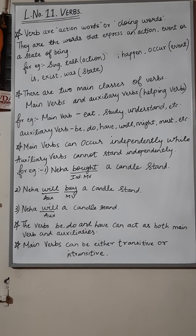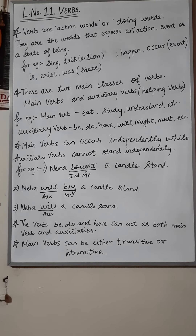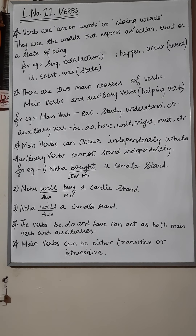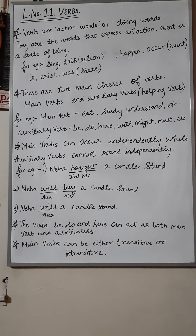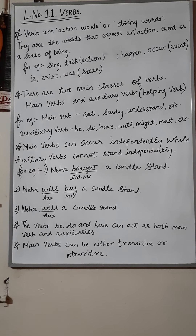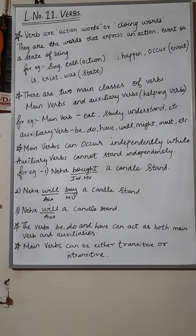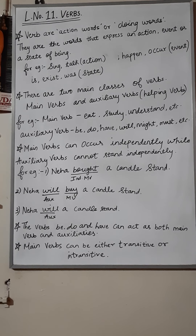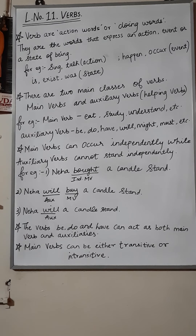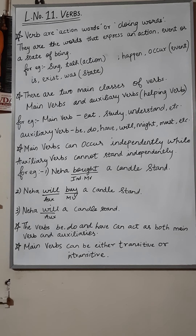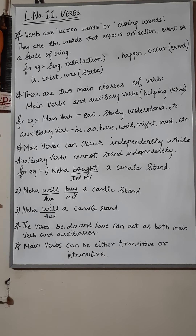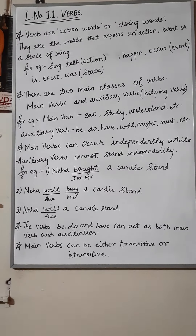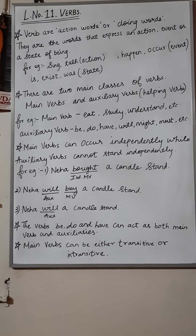For example, 'Neha bought a candle stand' — here 'bought' is an independent main verb. In the second sentence, 'Neha will buy a candle stand' — 'buy' is the main verb and 'will' is an auxiliary verb, meaning it is a helping verb. Now suppose I write 'Neha will a candle stand' — does it make any sense? No. So auxiliary verbs cannot stand independently; they must go along with the main verb. Also, the verbs be, do, and have can act as both main verbs and auxiliaries.